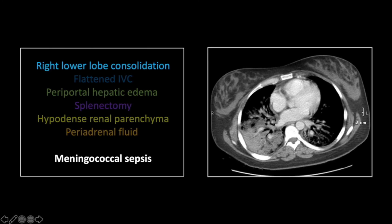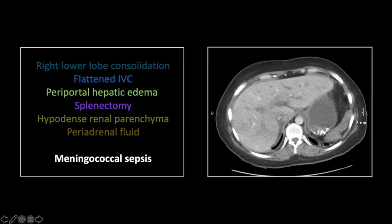That brings us to the final case in this entire series: meningococcal sepsis, or Waterhouse-Friderichsen syndrome. This case, as most do, begins with a pneumonia manifesting as a right lower lobe consolidation. The next cut down shows manifestations of hypoperfusion and possibly resuscitation: a flattened IVC and periportal hepatic edema. Perhaps the diagnostically most important finding is that of a prior splenectomy, as splenectomized patients have an increased risk of infection by encapsulated organisms.